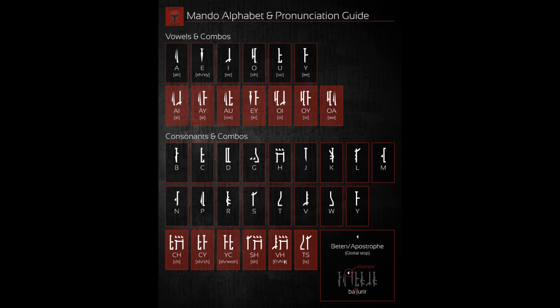Then there are the vowel combinations. Sometimes when two vowels are next to each other, they create a diphthong, or change from two distinct vowel sounds to one sliding vowel sound. Not all vowel combinations create diphthongs. And if they don't, then when they're next to each other, they remain separate sounds. But here is the list of the ones that do change.